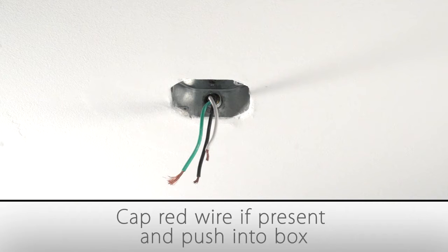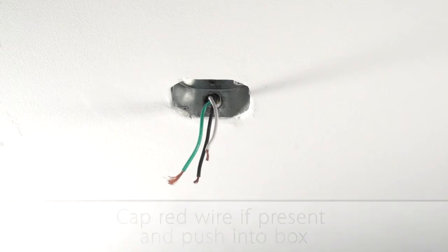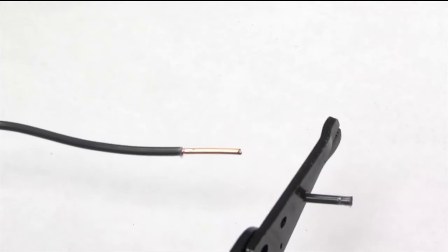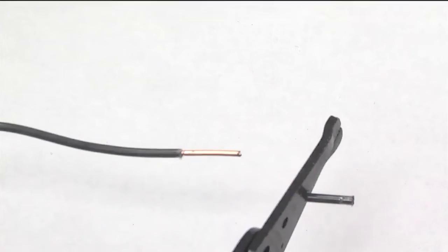If there is a red wire in the outlet box, go ahead and cap it and push it into the box. You will not need it. In order to get a good connection, you may have to strip a small amount of rubber insulation from the wires.